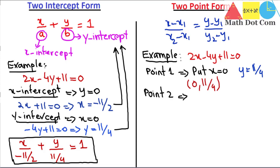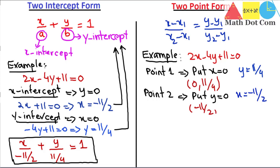For point 2, we put y equals 0 in the given equation. You can take any random point — I am taking this just for ease; you can also put x equals 1, 2, or 3. Putting y equals 0, we get x equals minus 11 by 2, so point 2 is (minus 11/2, 0). We now have the two points and just need to put these values into the standard form of the two-point form.